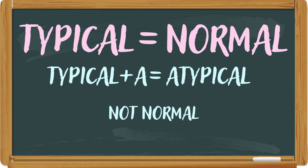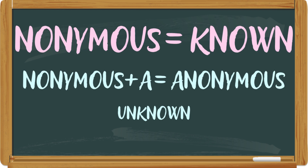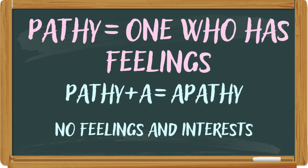'Typical' means someone who belongs to a certain type or class — typically normal. While 'atypical' is someone who is not normal. 'Anonymous' can be placed in this group as well. We can relate the base form to someone who is known, while 'anonymous' is someone who is unknown. 'Pathy' means feelings or interests, while 'apathy' refers to someone who lacks feelings and interests.